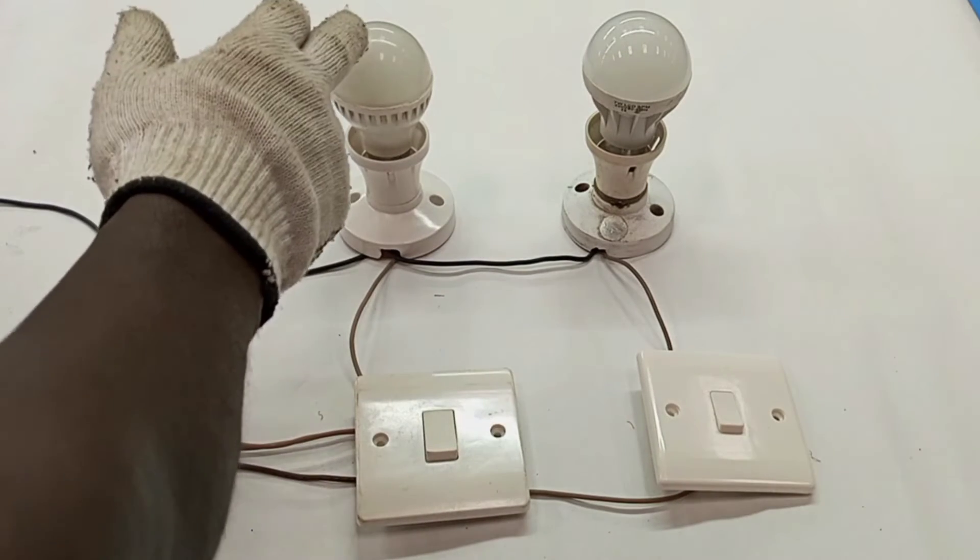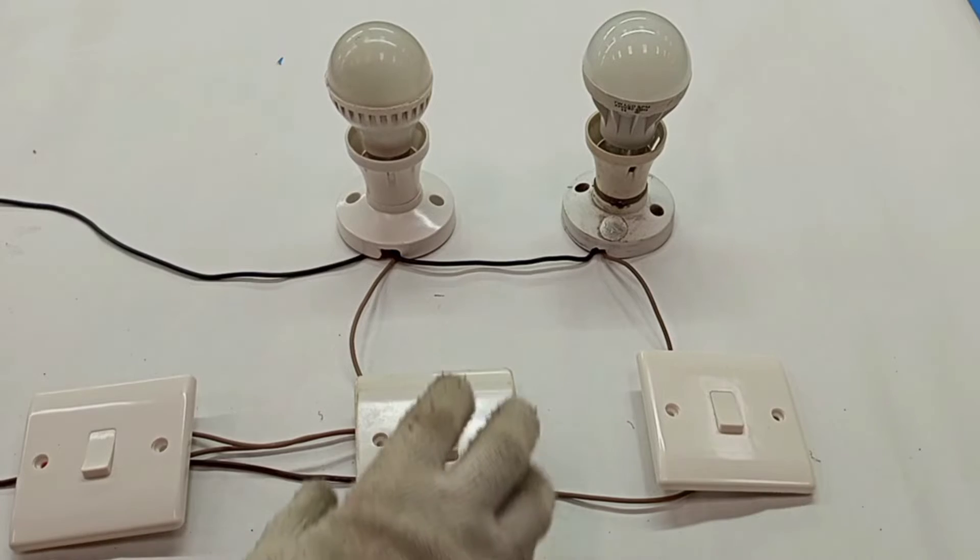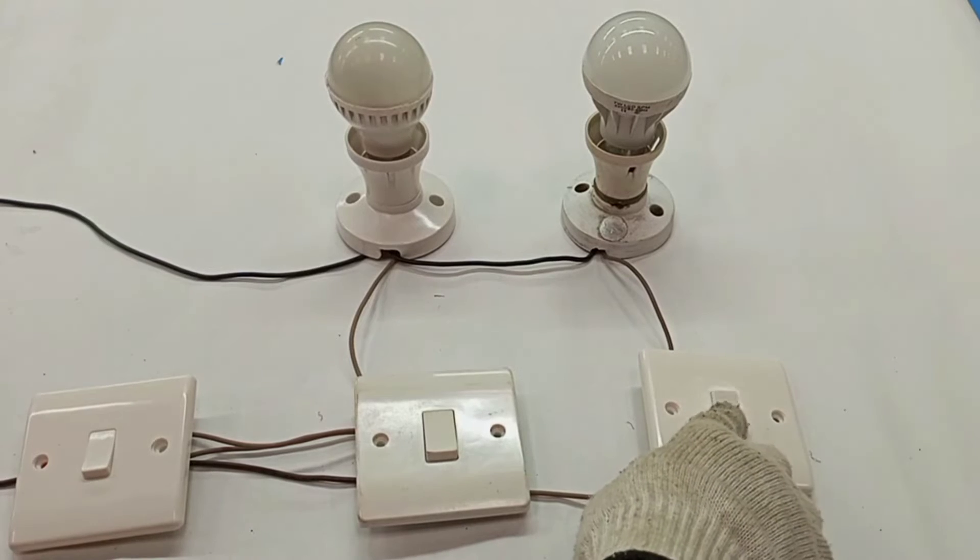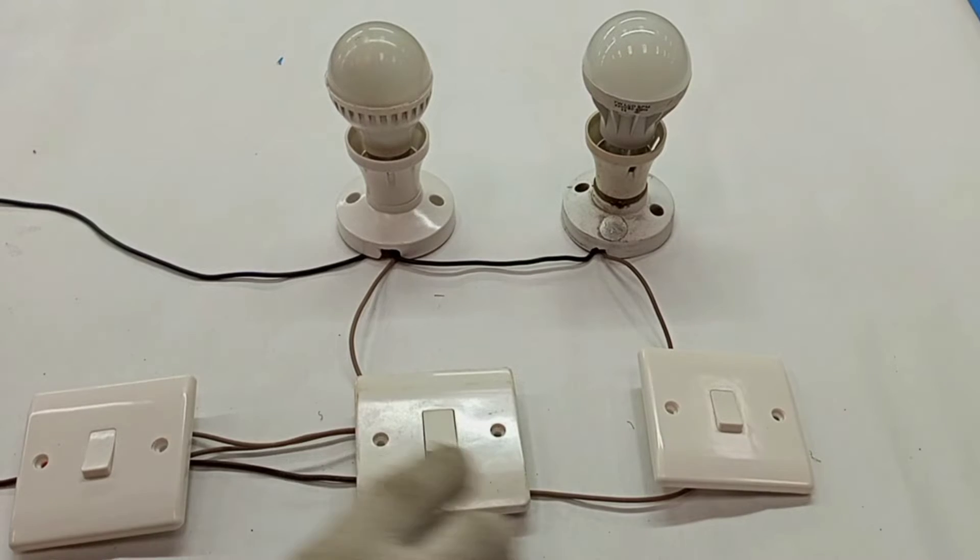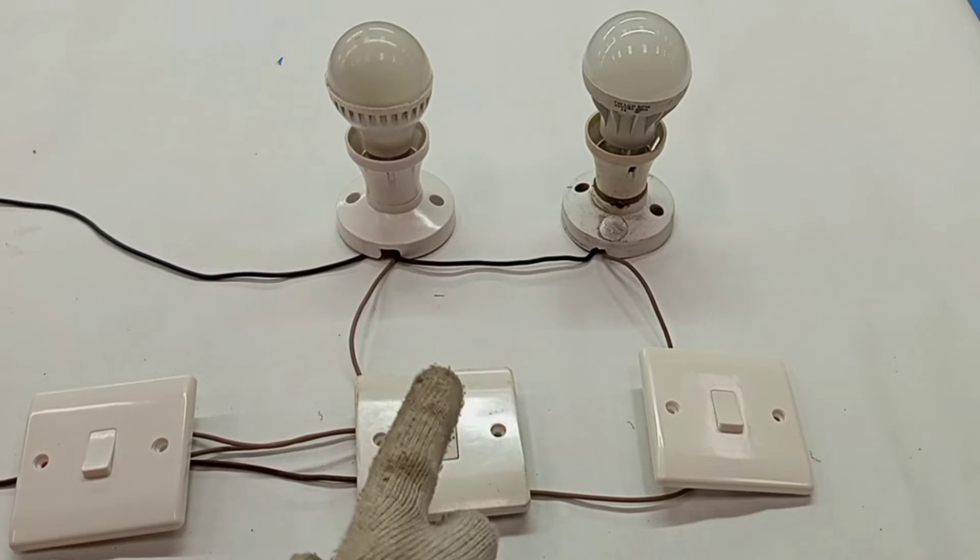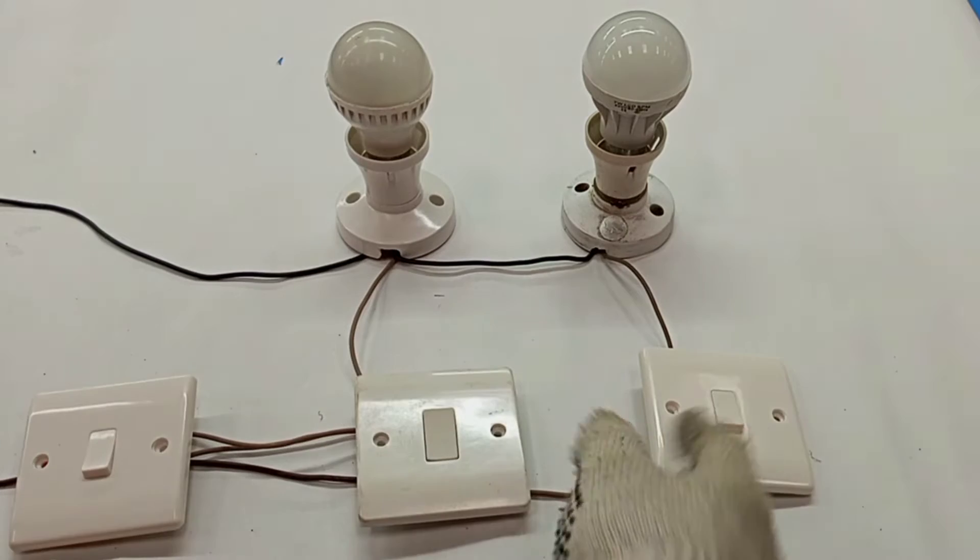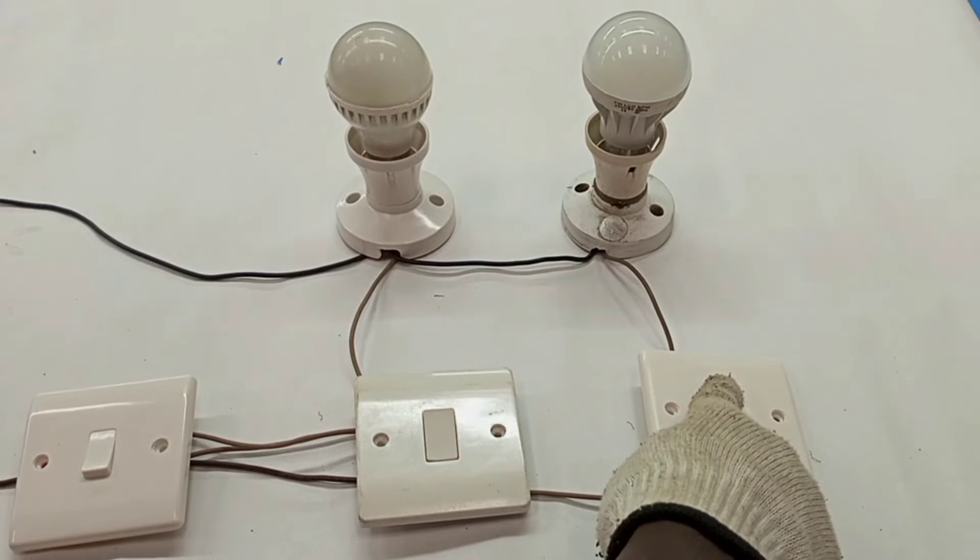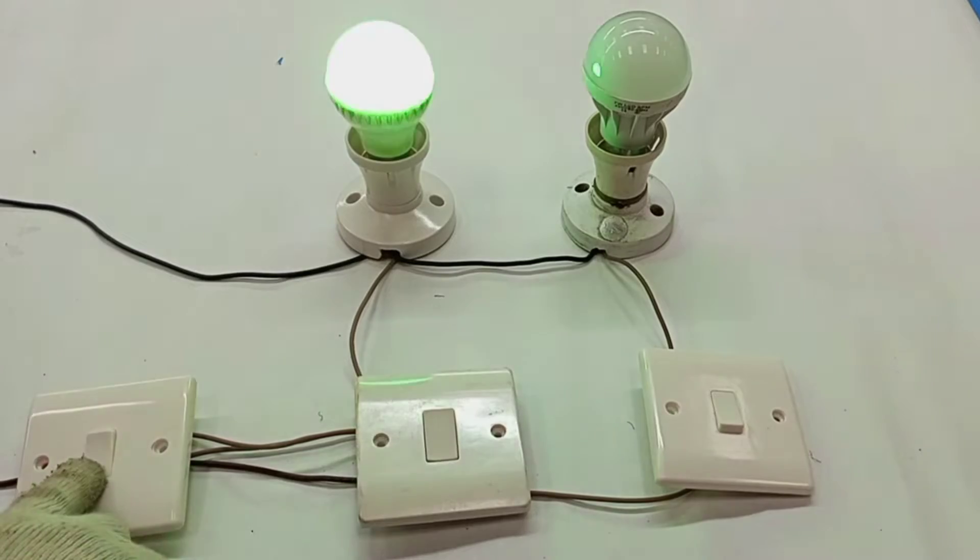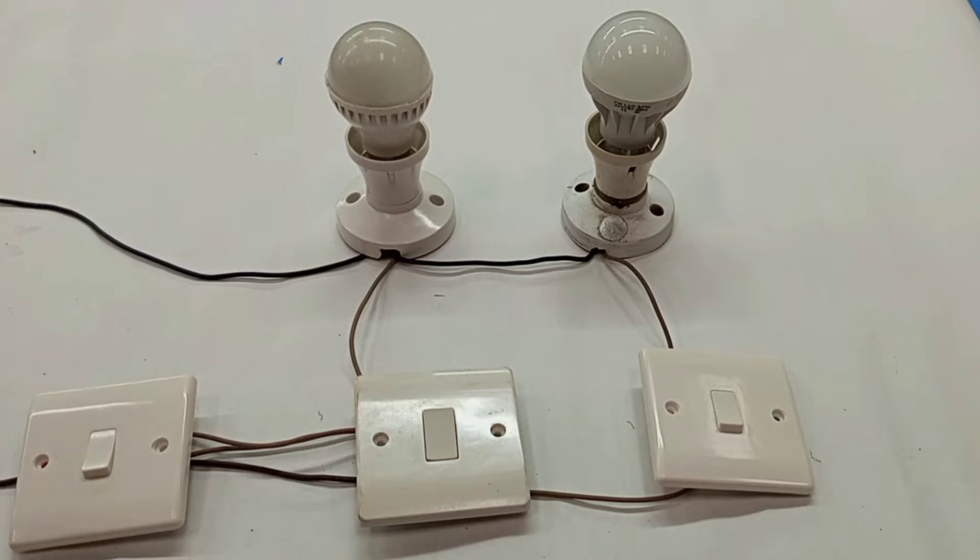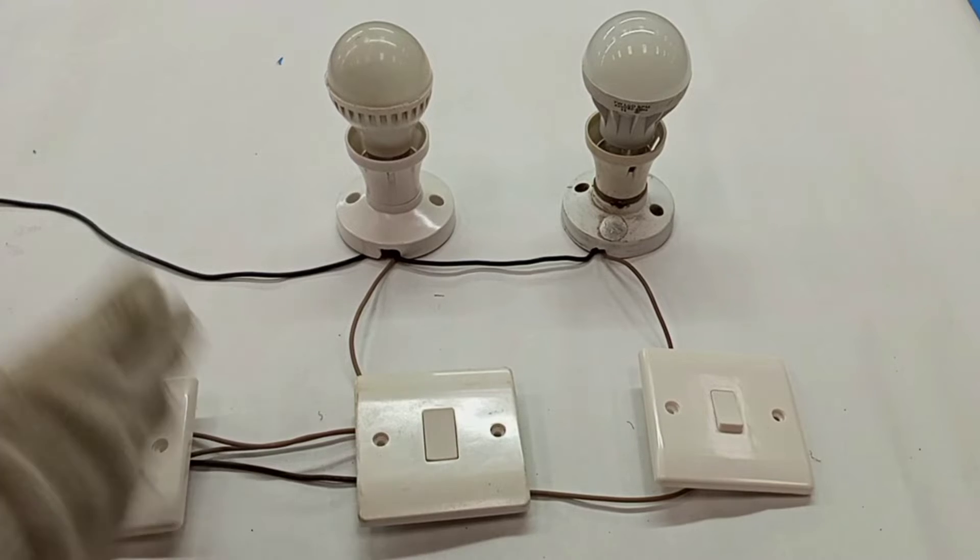This circuit is wired in a way that the power supply to the switch that controls this lamp and the power supply to the switch that controls this lamp are all wired through the master switch. So if the master switch is off, you cannot switch on the light. This light can only come on when the master switch is on, and when the master switch is on you can either switch it on or switch it off from here. You can also switch it on or switch it off from here.